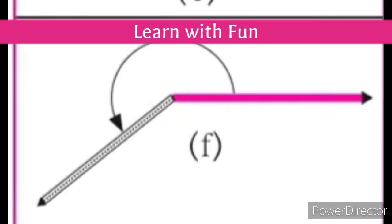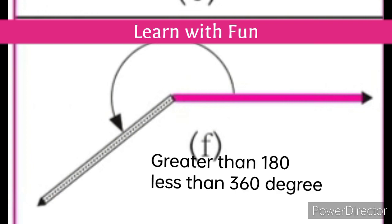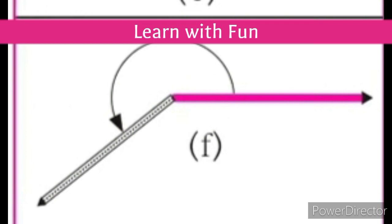The next type of angle is reflex angle. An angle whose measure is greater than 180 degrees but less than 360 degrees is called a reflex angle. The angle whose measurement is more than 180 degrees — it is more than 180 degrees but less than 360 degrees. It is more than a half circle. Such types of angles are called reflex angles.